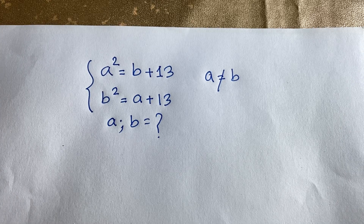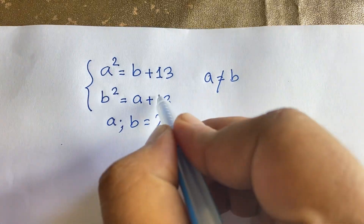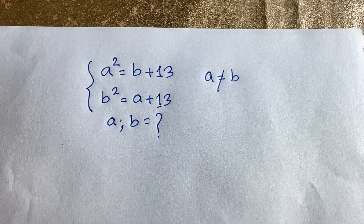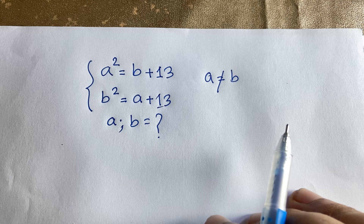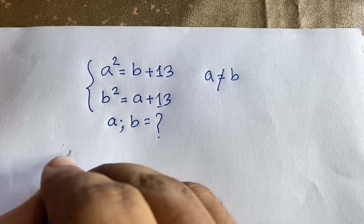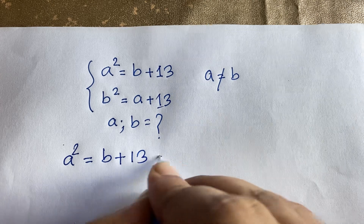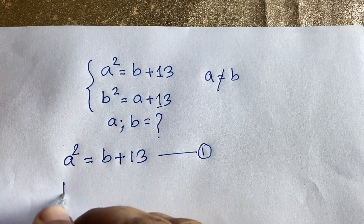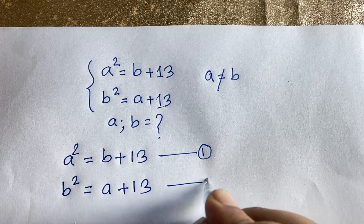In this video we solve this interesting math question: a squared is equal to b plus 13, and b squared is equal to a plus 13. We need to find the values of a and b, given that a is not equal to b. This is our first equation and this is our second equation.